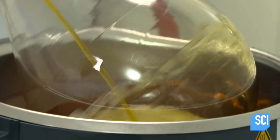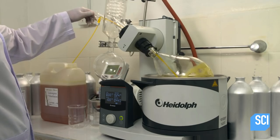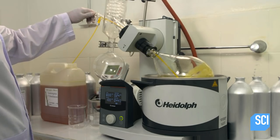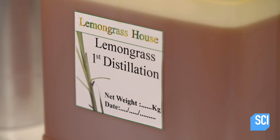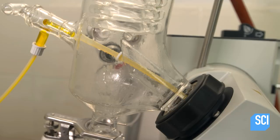The evaporator pumps out air and creates a vacuum in the flask, which lowers the boiling point. This prevents damage to the delicate molecules responsible for the lemongrass scent.